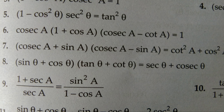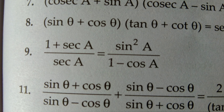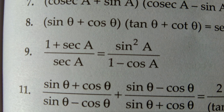In question number eight, sin theta plus cos theta times tan theta plus cot theta — multiply through to find the right-hand side. Left-hand side: 1 plus cos A. Using sine square A equals 1 minus cos square A (which is cos square A formula), apply A plus B into A minus B — giving 1 plus cos A on the right-hand side. The left-hand side is cos A plus 1. Multiply by 1 minus cos A over 1 minus cos A — this gives the right-hand side, hence proved.